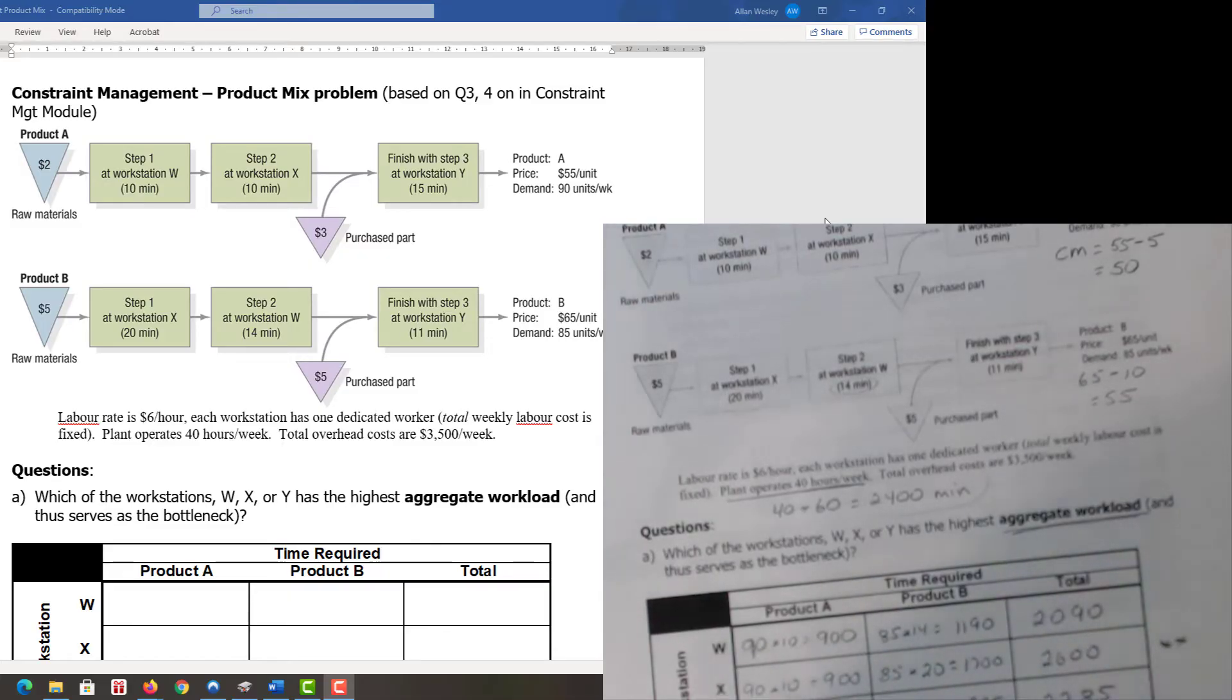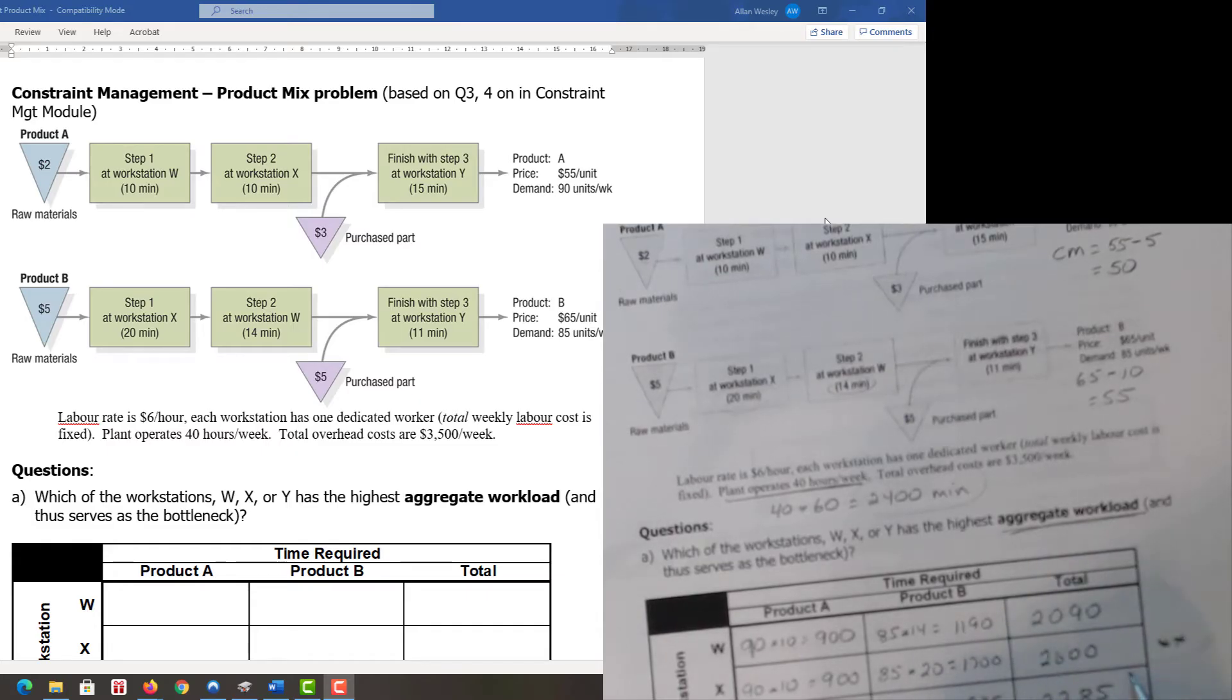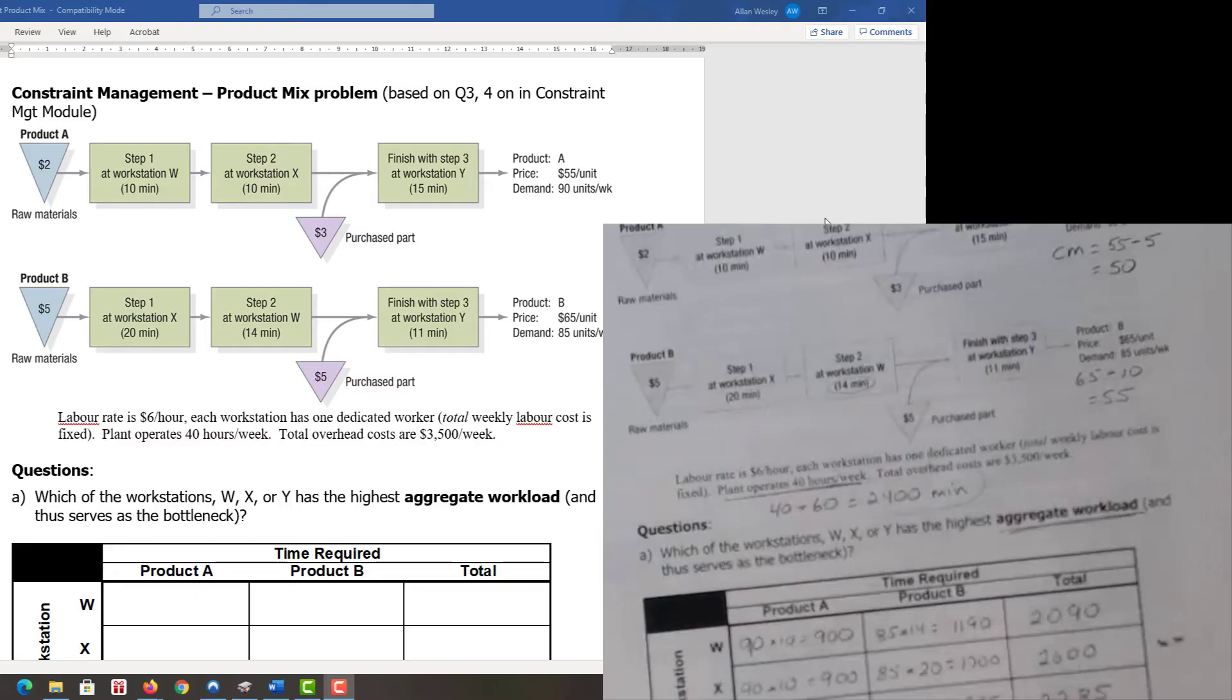Can we meet the demand for both products A and B? The answer is clearly no. That's driven by the fact that workstation X has 2,400 minutes available, but to produce all the product A and B that the market demands, we would need 2,600 minutes. We're 200 minutes short. Workstation X is keeping us from producing as much as we want.